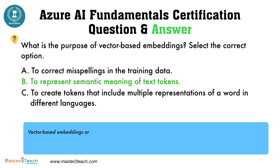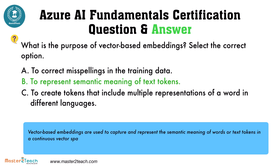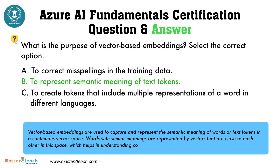Vector-based embeddings are used to capture and represent the semantic meaning of words or text tokens in a continuous vector space. Words with similar meanings are represented by vectors that are close to each other in this space, which helps in understanding context and relationships between words.